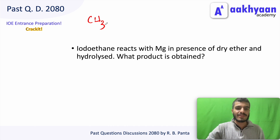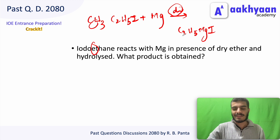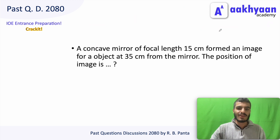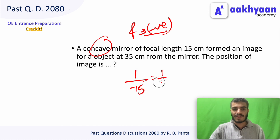C2H5I (ethyl iodide) reacts with Mg in dry ether to form a Grignard reagent: C2H5MgI (ethyl magnesium iodide). Then the Grignard reagent reacts to give a product. For the concave mirror problem: 1/f = 1/v + 1/u, where the object is at 3 cm from the mirror. Using the mirror formula to find the image position.